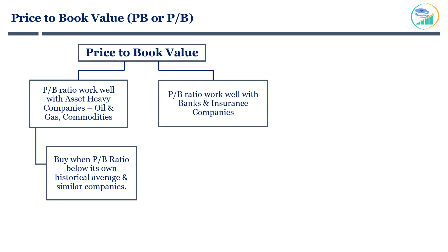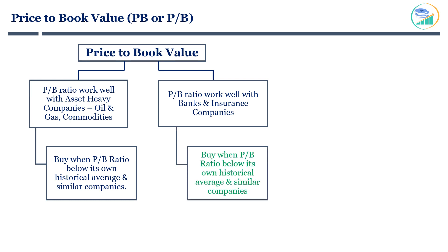Price to book ratio works best for financial companies as well, like banks and insurance companies. Financial companies follow mark-to-market accounting rules, meaning they are required to record their assets at the fair value traded in the market. Balance sheet items such as assets and liabilities reflect their current market price. Therefore, the shareholders' equity on the balance sheet of a financial company is very close to the net worth of the company's assets in the market. The stock is a buy when PB ratio is trading below its own historical average and that of competitors with similar size and business model.